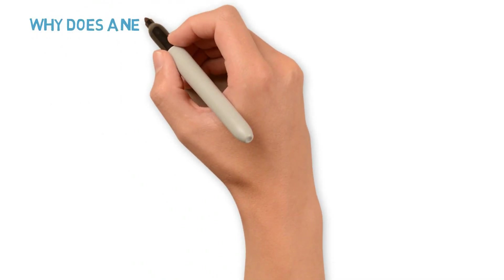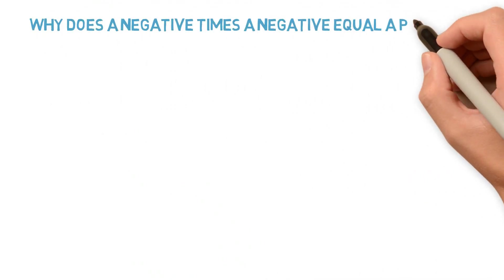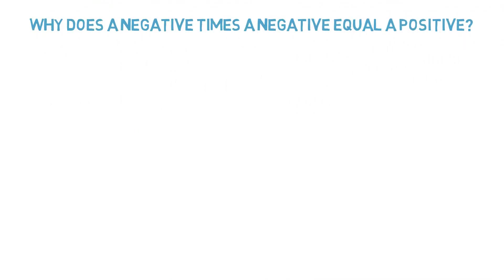Why does a negative times a negative equal a positive? This rule is not just made up. There is a chain of reasoning, a mathematical argument, that shows why the rule has to be that negative times negative equals positive. Here's how the reasoning goes.